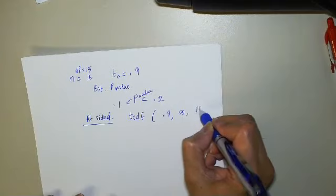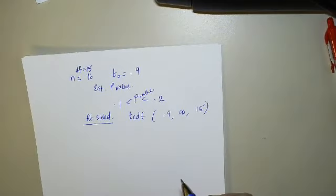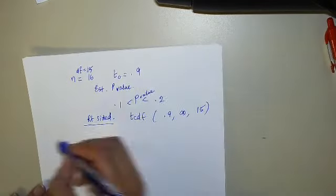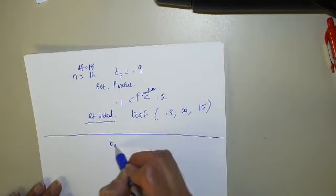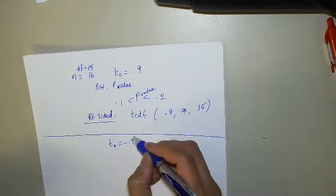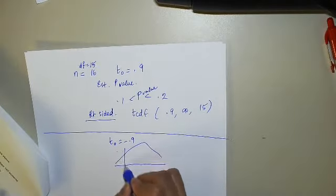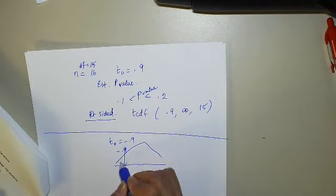And if you don't like that, you could have done... They have to tell you if it's right-sided or left-sided, right? So let's say it's right-sided, and I could have done tcdf 0.9, comma infinity, comma 15 degrees of freedom.